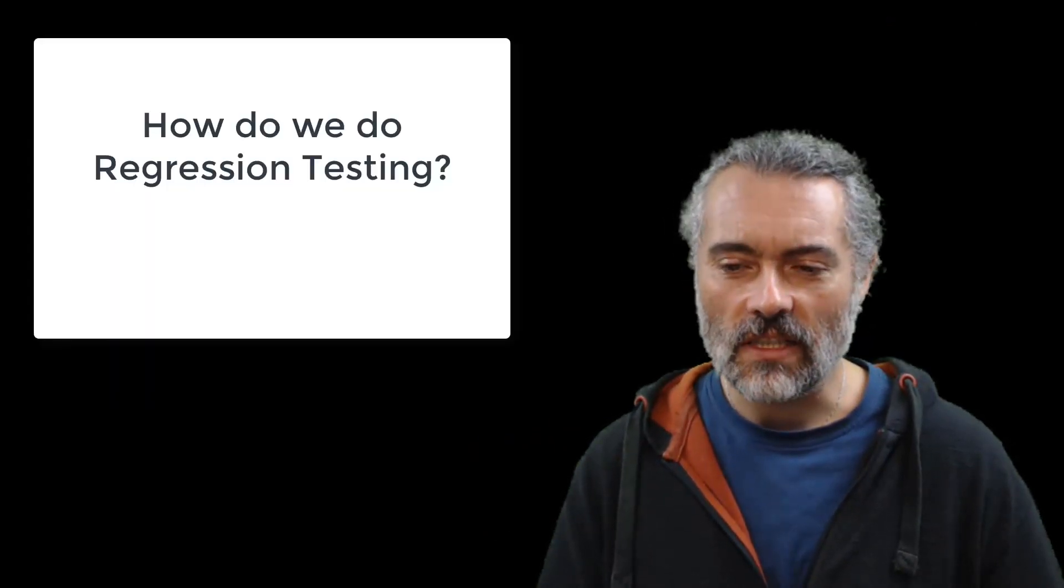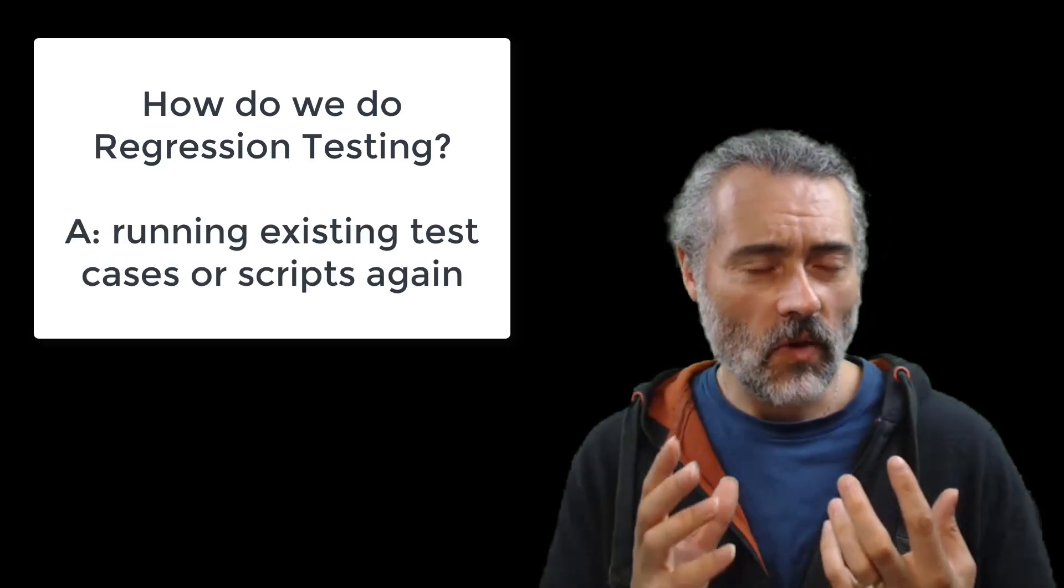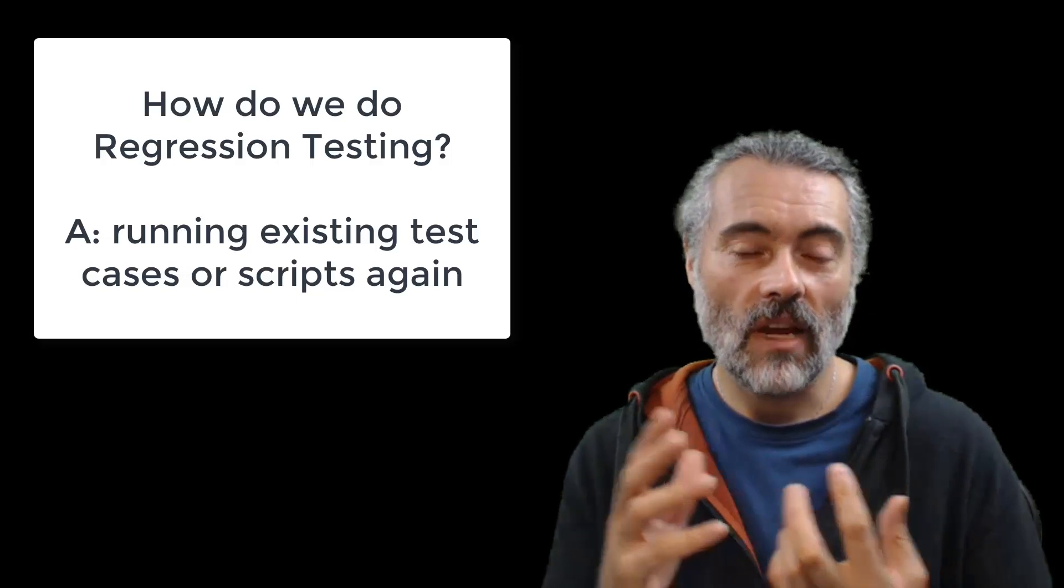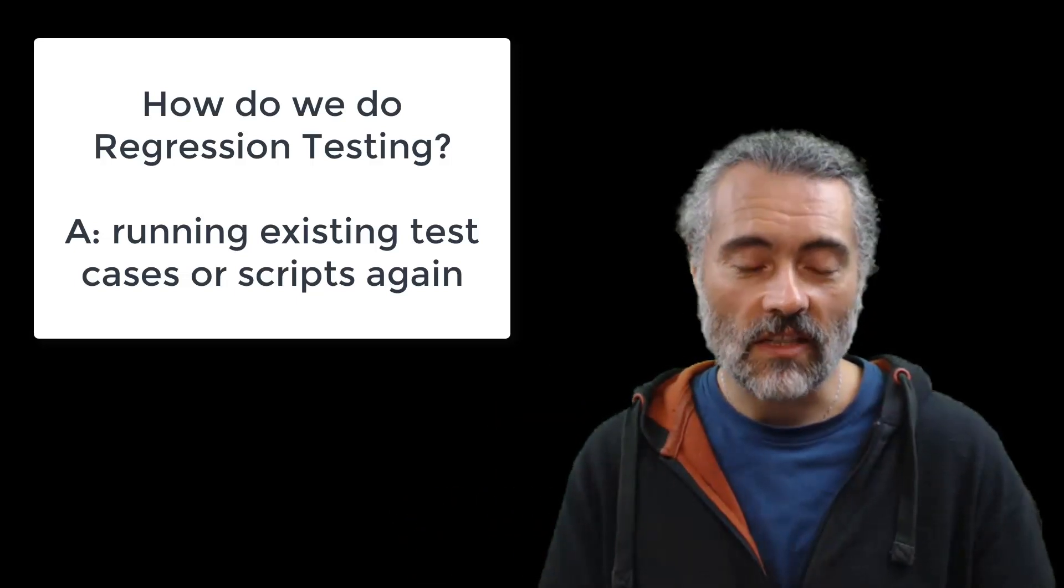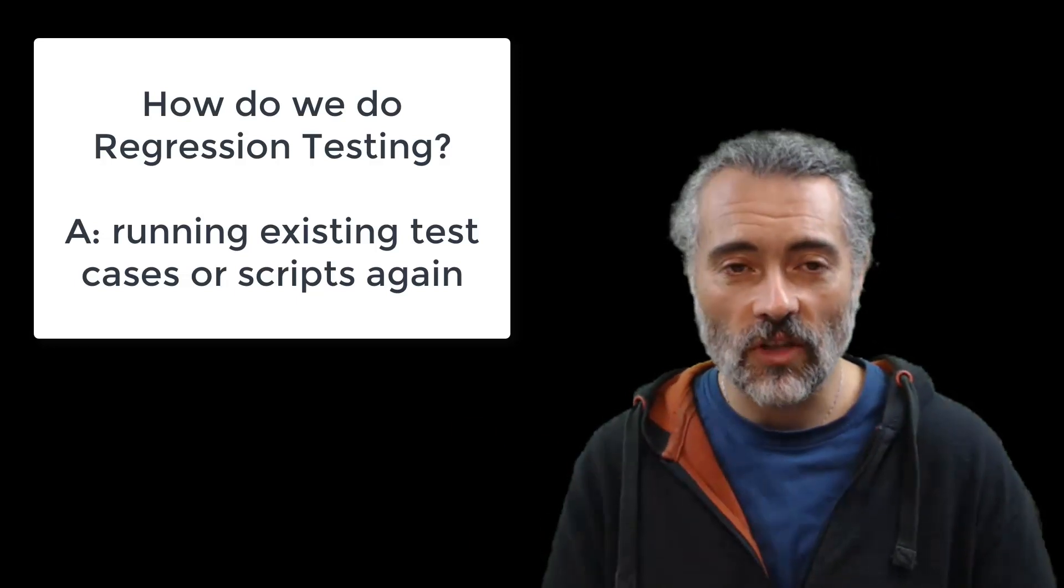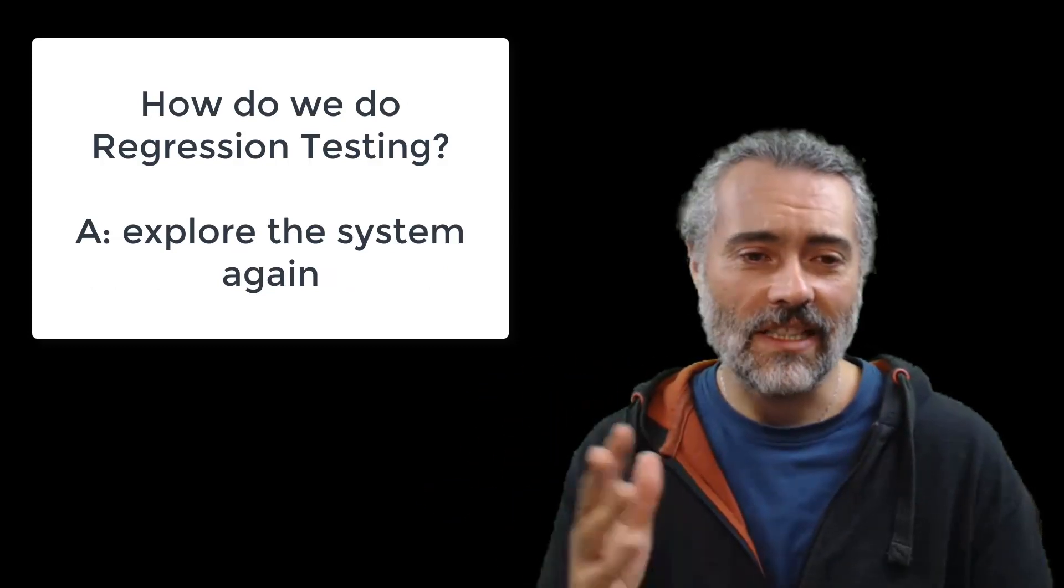So how do we do regression testing? So the legacy view of how we do regression testing is, well we've already tested it. So what we'll do is we'll rerun those tests again. So if we have tests in another area, we'll rerun those tests. If we've got test cases, we'll rerun those test cases. If we've written scripts, we'll rerun those scripts. If we're doing exploratory testing, we'll do exploratory testing in those areas again.